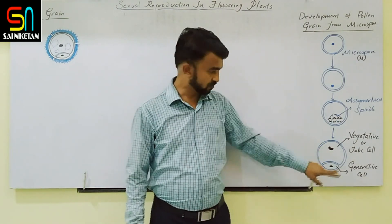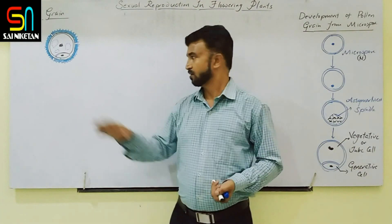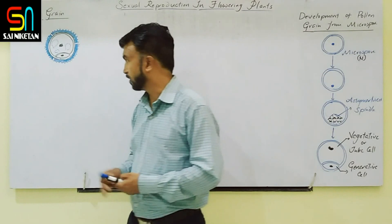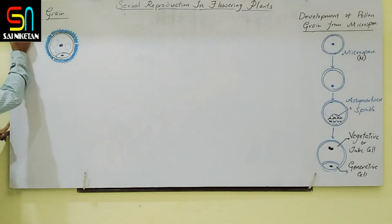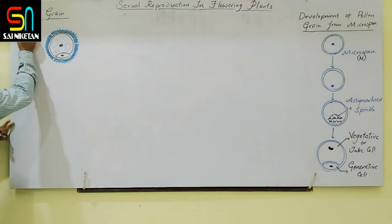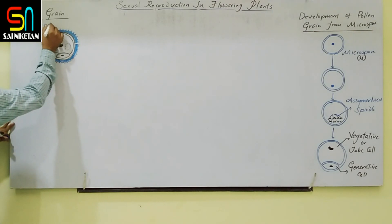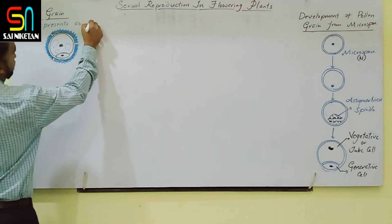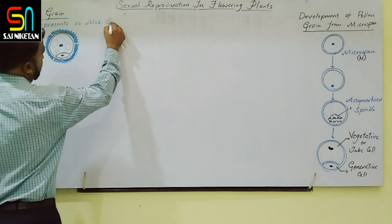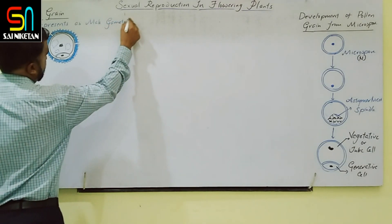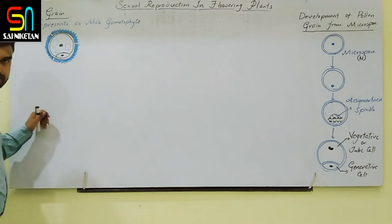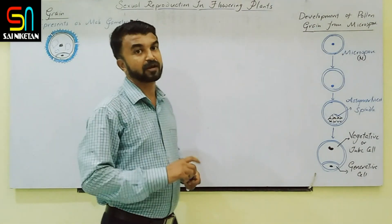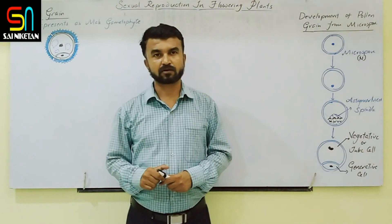This is the development of the pollen grain from the microspore, the same figure drawn here but now with the pollen wall shown. The first point about the pollen grain: it represents the male gametophyte. In the alternation of generations, the complete plant body is the sporophytic generation, and the pollen grain is the male gametophyte where the male gamete is produced.